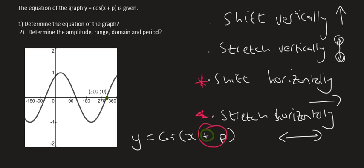What you need to do is find a point on the graph where you know the coordinates. So this point over here in green, that has the coordinates of 300 and 0. Now you need to know what an original cos graph, what the coordinates of an original cos graph would be at that point. So that's why it's very important that you know what the normal graphs look like.